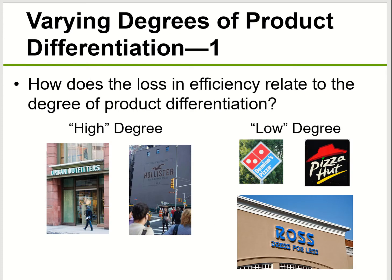Not all products have the same degree of product differentiation. For clothing businesses, you're going to see a high degree of product differentiation — there's a huge difference between brands like Gap, Abercrombie, or Hollister. But for pizza companies — comparing Domino's, Pizza Hut, and Papa John's — they are somewhat similar. To some consumers who aren't particular about pizza, there's a very low degree of product differentiation.